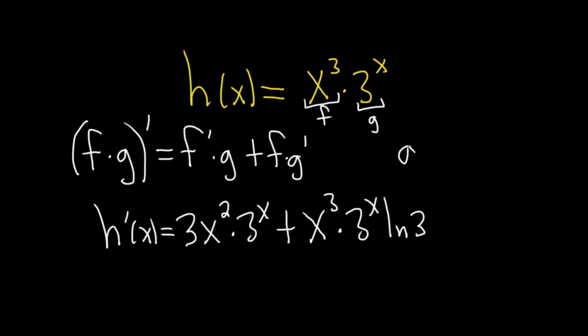So recall, if you have a to the x, and you want the derivative of that, it's simply a to the x, natural log of a. So here our a is 3, so it's 3 to the x, ln 3.